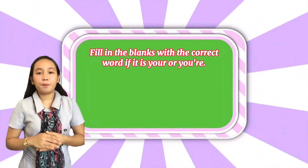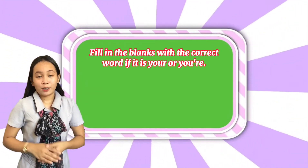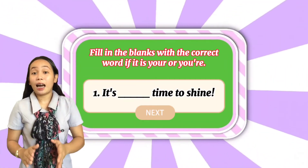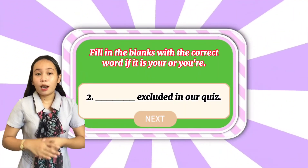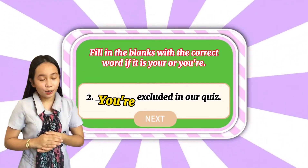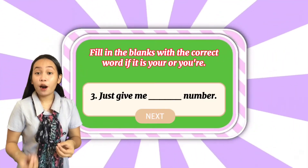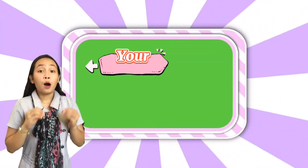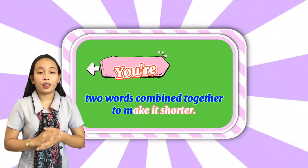For our quiz, you need to fill in the blank with the correct word — either 'your' (Y-O-U-R) or 'you're' (Y-O-U-apostrophe-R-E). Let's start. Are you ready? For the first question: 'It's blank time to shine.' The answer is Y-O-U-R. For the second one: 'Blank excluded in our quiz.' The correct answer is Y-O-U-apostrophe-R-E. For the third one: 'Just give me blank number.' The answer is 'your,' Y-O-U-R. Let's all remember that 'your' (Y-O-U-R) is the sense of belongingness, while 'you're' is the two words combined together to make it shorter.